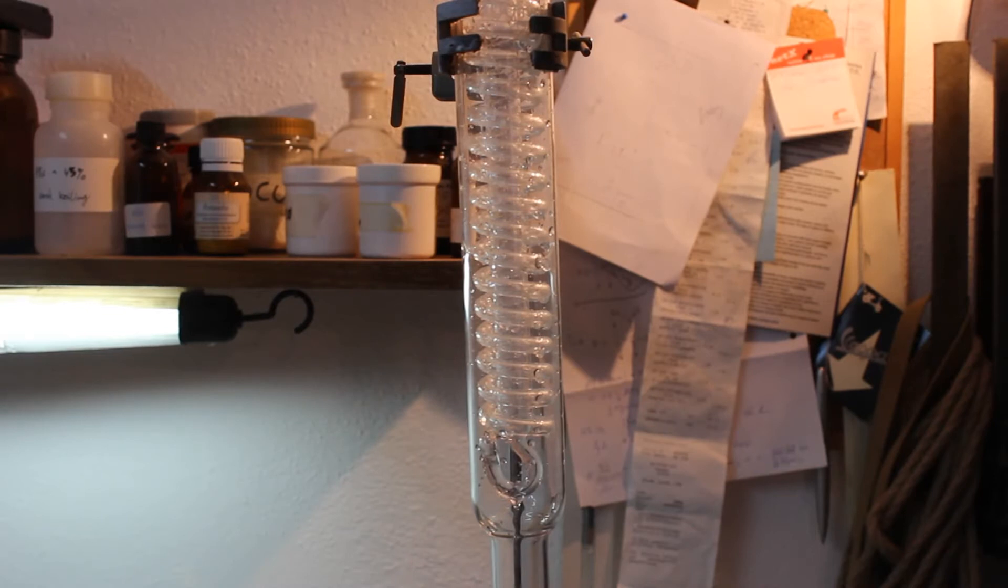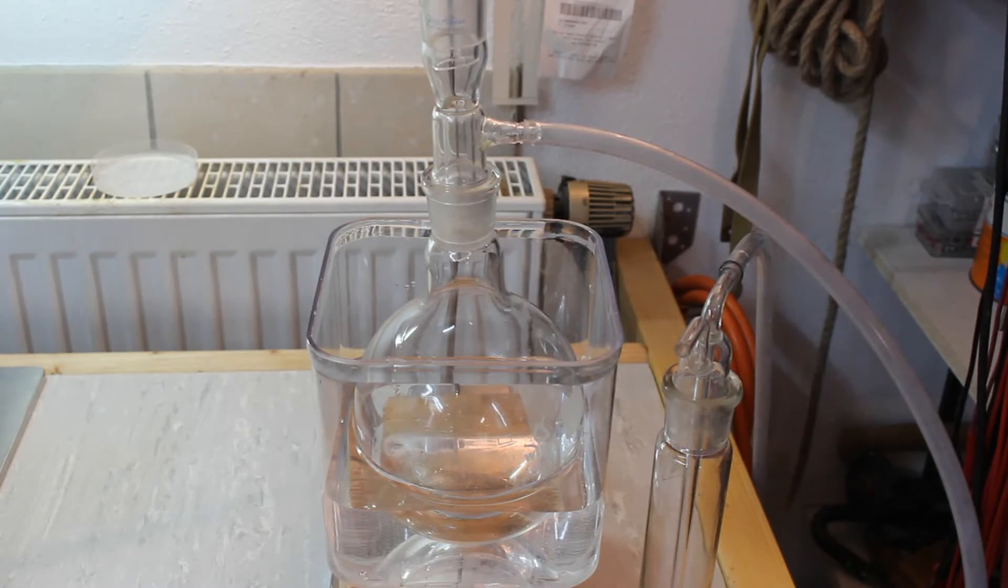On the cold side of the apparatus I have my dimroth cooler. And last but not least we have a vacuum takeoff, our collection flask and a wash bottle containing just a little bit of sulfuric acid. And this serves to trap any ether vapors that want to escape.